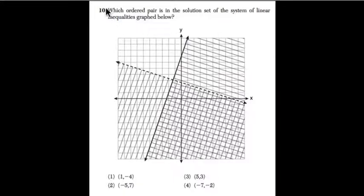So this says which ordered pair is in the solution set of the system of linear inequalities graphed below. We have two inequalities graphed here, and you can see them.